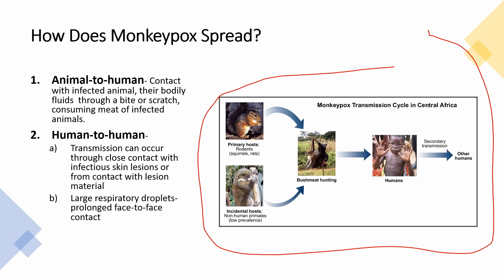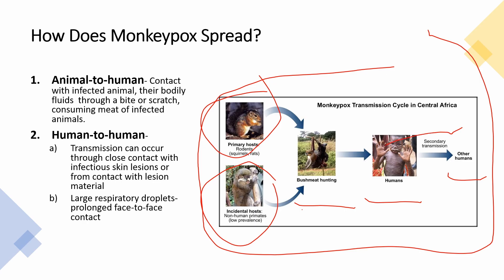This is a depiction of monkeypox transmission in Central Africa. The primary host is rodents, and monkeys are incidental hosts. The next step is bushmeat hunting — people hunting bushmeat to eat it — and then it spreads to humans, who can then transmit it to other humans, which is considered secondary transmission.